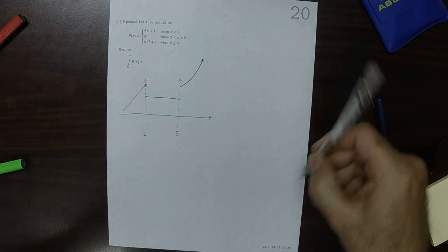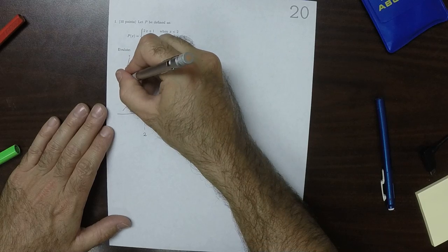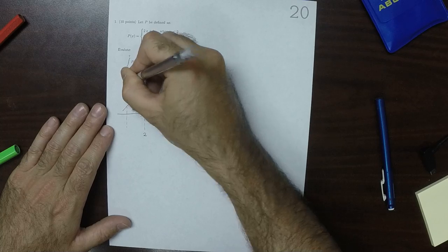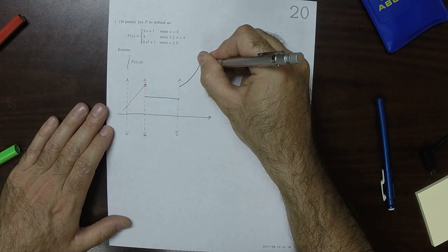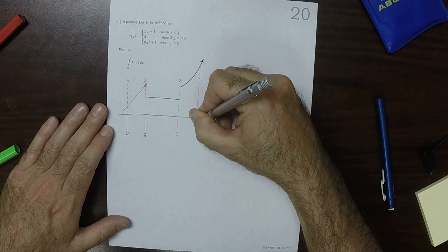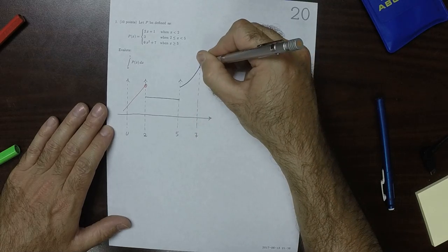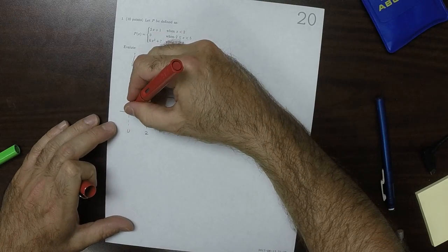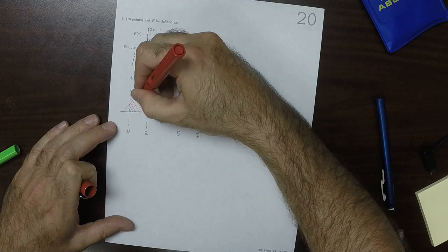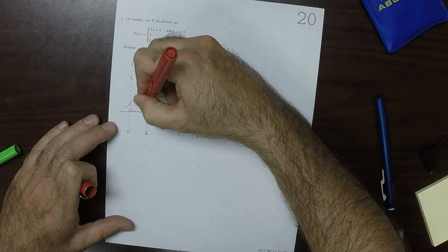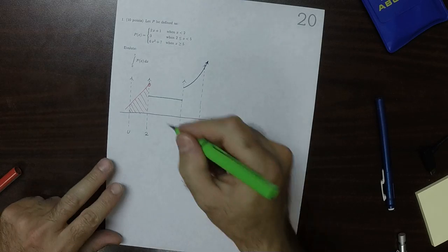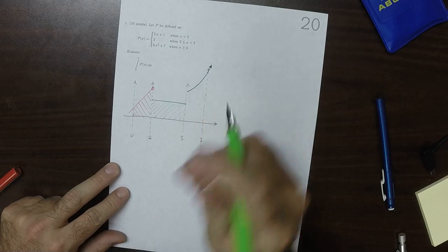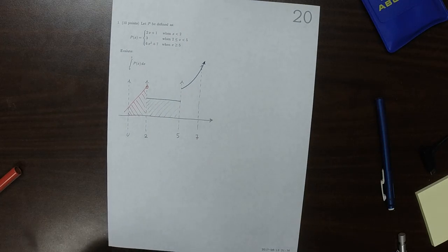So then we want to integrate from 0 to 7. So if this is 0 and this is 7, then what's being requested is we want this area here. We want the red area plus the green area and then plus the blue area.